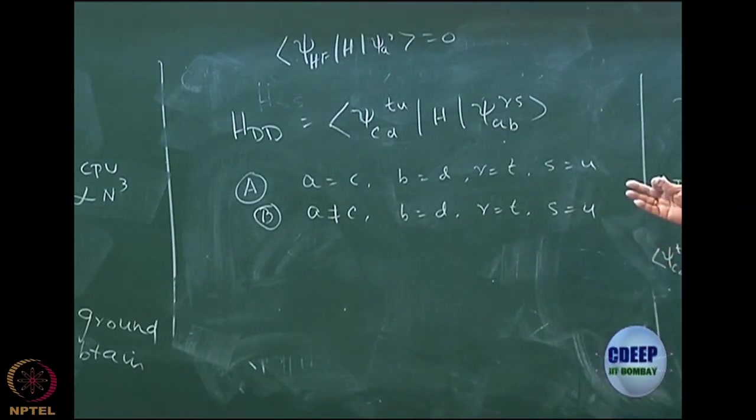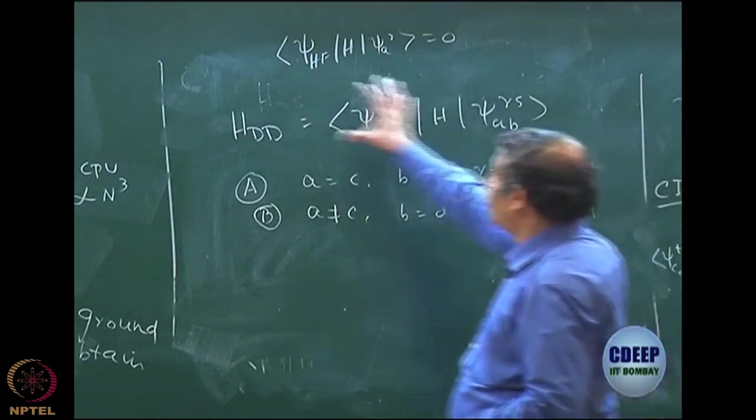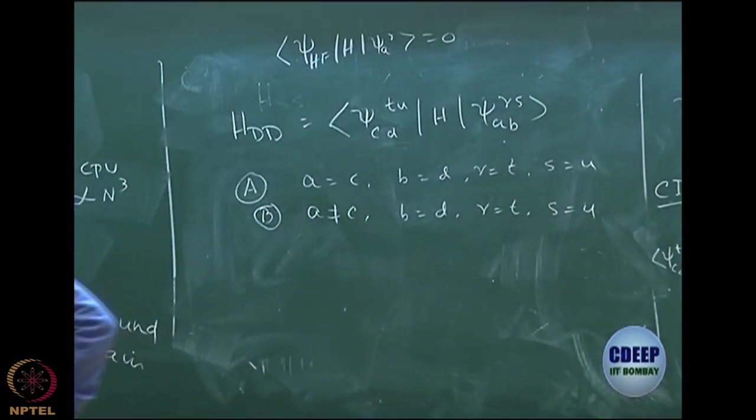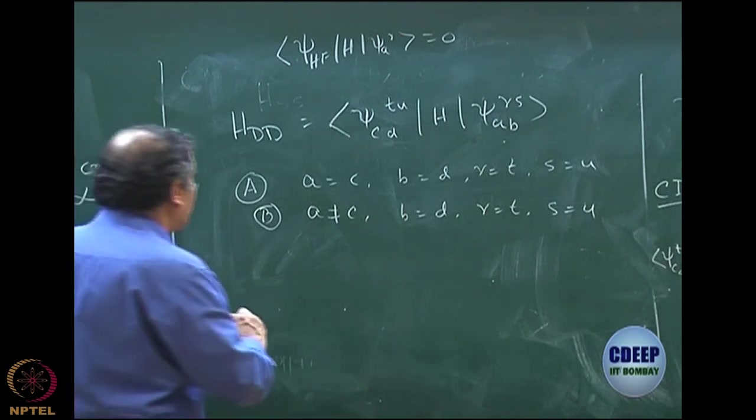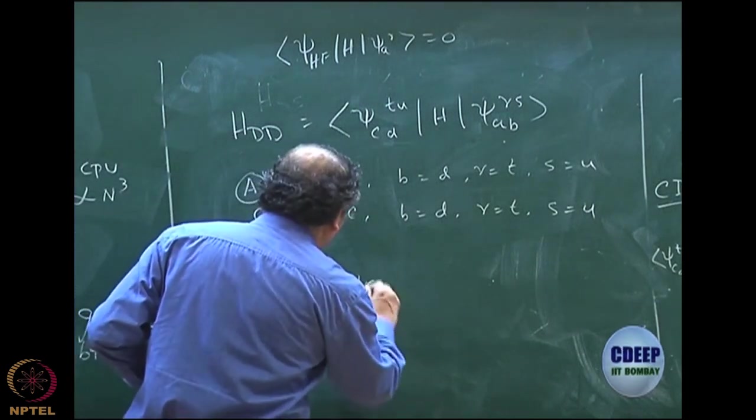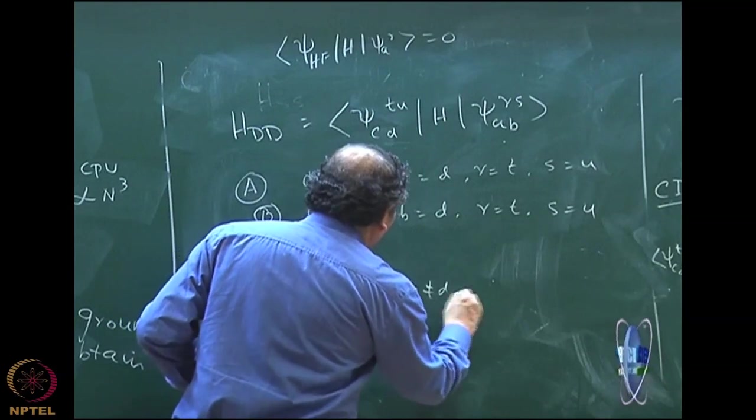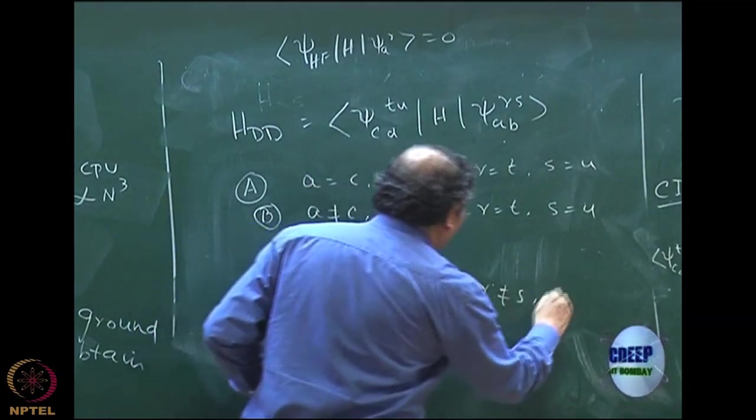You can see there will be 3, 4, up to 4 difference. When everything is different, what is the occupancy difference? A is not equal to C, B is not equal to D. A is not equal to C, B is not equal to D, R is not equal to S, T is not equal to U. You understand?